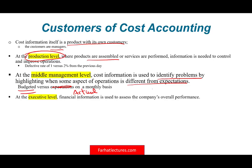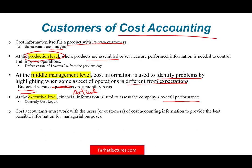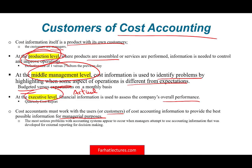At the executive level, cost information is used to assess the company's overall performance. Here they might look at a quarterly or semi-annual report at a high level, but it is still cost accounting. The cost accountant must work with users at all levels — production, middle management, and executive — to provide the best possible information for managerial purposes. The information must be timely and relevant. The most serious problem companies face is when they try to use financial information developed for external reporting for internal decision making — that is a big mistake, because cost accounting information is prepared with a different motivation, a different audience, and different characteristics.